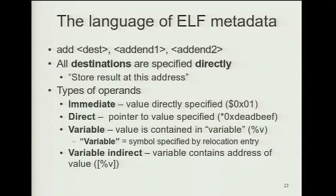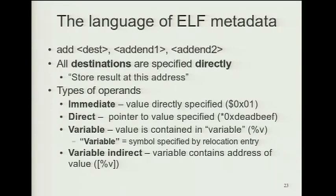Here's how we implement the move instruction using a RELATIVE relocation entry — one of the simpler ones that doesn't use symbols. You specify the offset (where to make the move) and the addend is specified directly in the relocation entry, then it's copied with proper endianness as a 64-bit value. For move-indirect (like load effective address), the destination is specified directly but the value is indirectly specified: a symbol called 'foo' has a value which is an address, and from that address you look up what to move. This is implemented with a COPY type relocation — it looks up the symbol, finds the offset to copy to, finds the address to copy from, and the size specifies how many bytes. A single COPY instruction implements our indirect move.